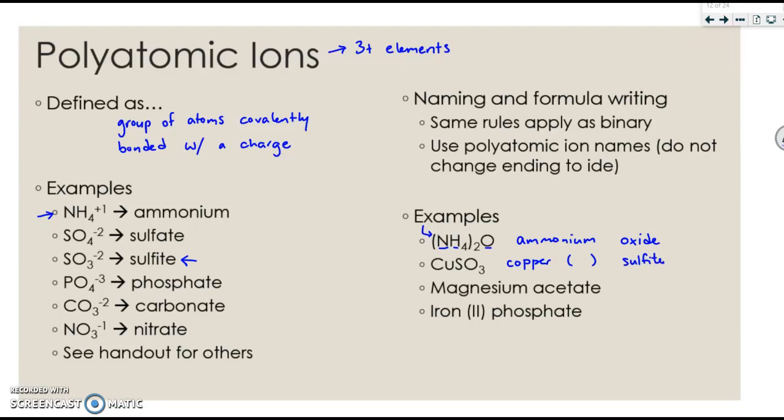So to determine the roman numeral, it's the same as before. Sulfite is negative 2. Therefore, copper must be positive 2. So it's copper (II) sulfite.